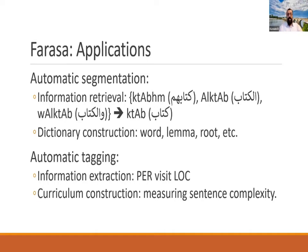Segmentation means, for example, the word 'kitabohum' meaning 'their book' would be separated into 'kitab' and 'hum,' or 'al-kitab' becomes 'al' plus 'kitab,' meaning 'the book.' Once you do segmentation, you can return all words back to their stem, which is 'kitab.' This is very helpful for information retrieval. It can also be used for dictionary construction — starting from a word, you can find the lemma and the root.